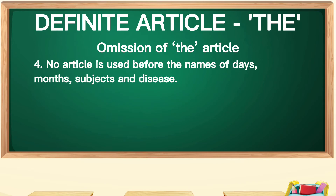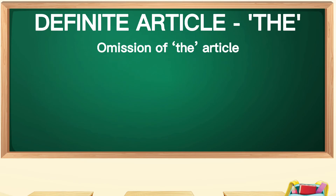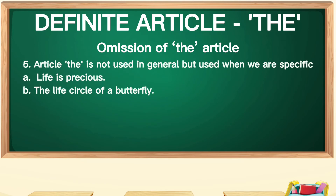The fourth case: no article is used before the names of days, months, subjects, and diseases. We don't say 'the Monday', 'the April', or 'the mathematics' — we just say 'mathematics.' The is not used when we talk in general. For example: 'Life is precious' — we say this in general, not in particular. But when we say something particular, we say 'the life cycle of a butterfly.'